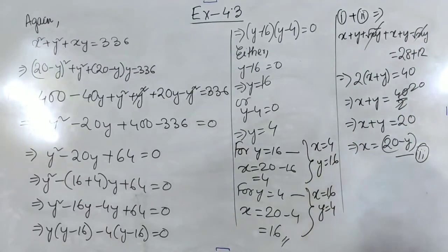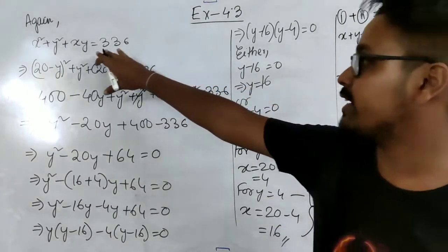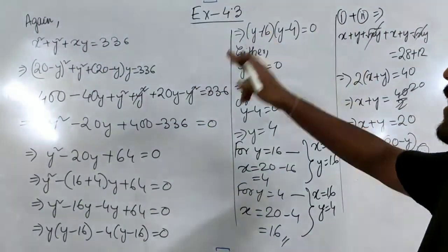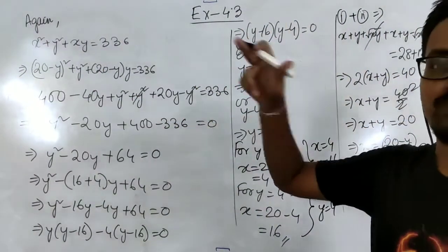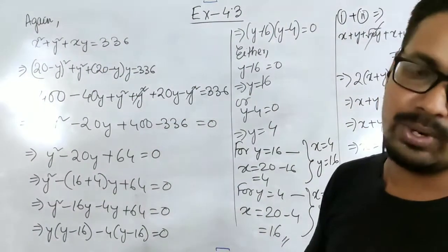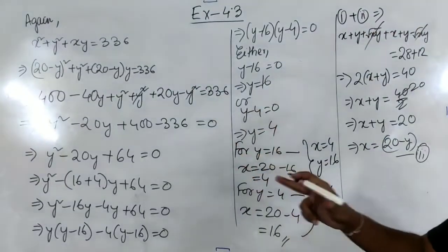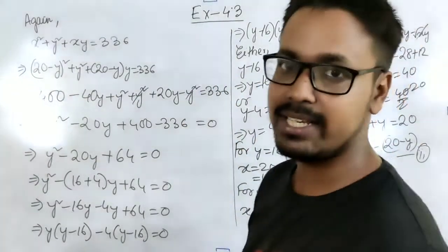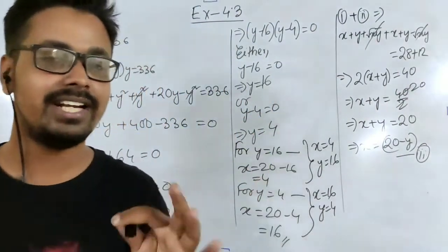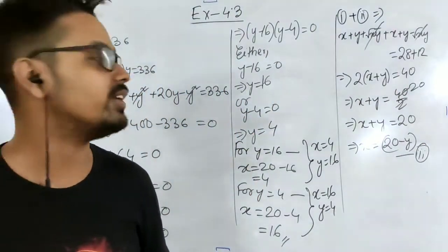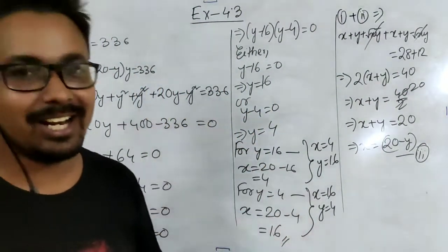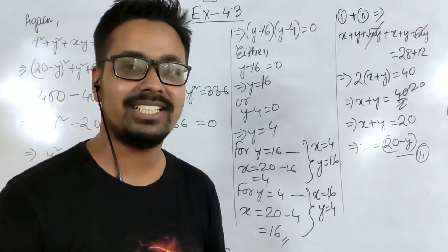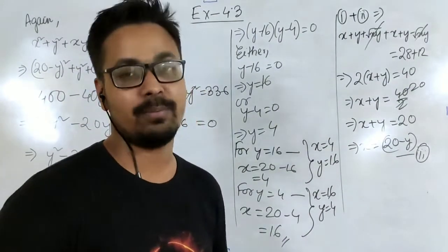The two solution sets are: x equal to 4 and y equal to 16, or x equal to 16 and y equal to 4, for the equations x plus y plus root xy equal to 28 and x squared plus y squared plus xy equal to 326. That's how you solve this sort of equation — it is lengthy but very methodical.